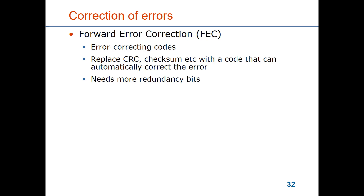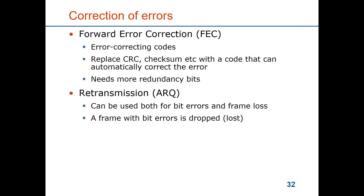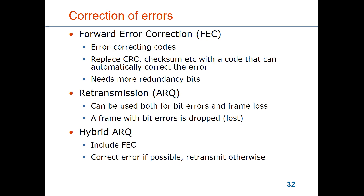The other method is called retransmission or automatic repeat request, and this is what we will present here in this module. It can be used both for bit errors when you detect that the frame is not correct, or it can be used for missing frames when you see from the sequence numbers that one or several frames have been lost. There is also a combination of the two called hybrid RQ — maybe use a forward error correction to correct a few bit errors per frame, but not expecting it to deal with all situations. Instead you have the ARQ which then uses retransmission to handle the errors which could not be corrected.